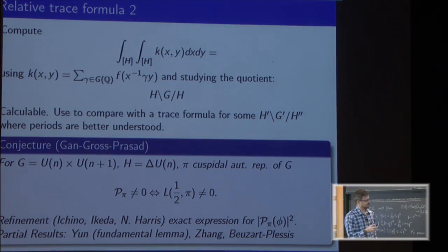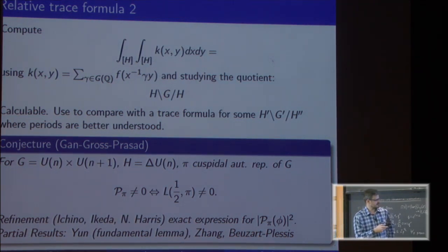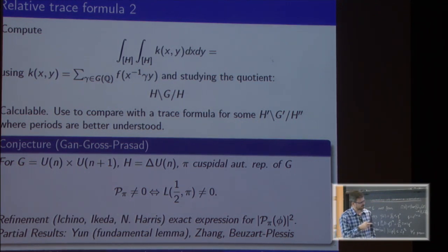This is a concrete example of a conjecture where this was applied. For G we take a product of unitary groups. For H it's a diagonal embedding of the smaller group. It's a unitary group of n and n+1, and we embed diagonally a smaller group. We take a cuspidal representation of G.